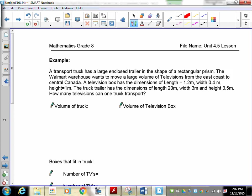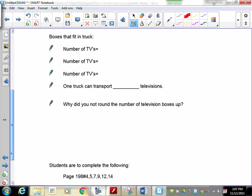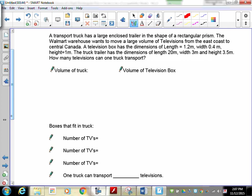This is a big question, but we're going to do it piece by piece. A transport truck has a large enclosed trailer in the shape of a rectangular prism. The Walmart warehouse wants to move a large volume of televisions from the East Coast to Central Canada. A television box has dimensions of 1.2 meters length, 0.4 meters width, and 1 meter height. The truck trailer has dimensions of 20 meters long, 3 meters wide, and 3.5 meters tall. What we need to do is find the volume of the truck and the volume of the television box.